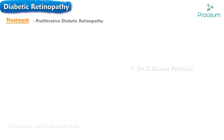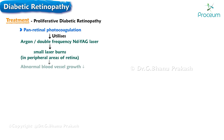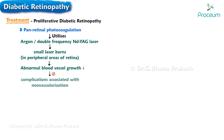The primary treatment option for proliferative diabetic retinopathy is panretinal photocoagulation. This procedure utilizes either argon or a double-frequency neodymium-doped yttrium-aluminum garnet laser to create small laser burns in the peripheral areas of the retina. By targeting these areas, abnormal blood vessel growth is reduced, helping to prevent further complications associated with neovascularization.